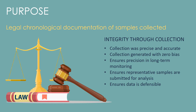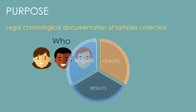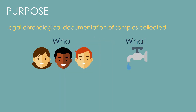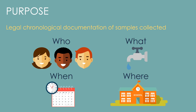A chain of custody is a legal document that is a summary of the sampling information being submitted to the State Environmental Laboratory. In any situation where you are collecting samples, maintaining integrity is crucial. The chain of custody is a key component for that integrity by outlining who collected the samples, what was collected, when it was collected, and where.